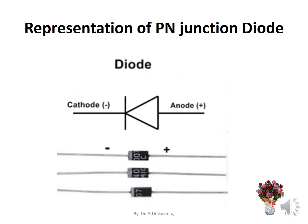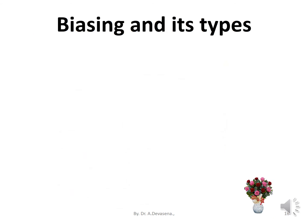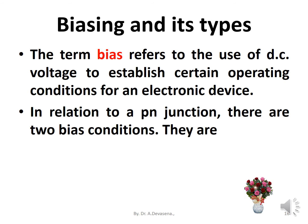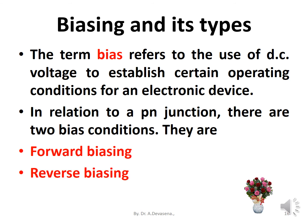Biasing and its types: The term bias refers to the use of DC voltage to establish certain operating conditions for an electronic device. In relation to a P-N junction, there are two bias conditions: forward biasing and reverse biasing.